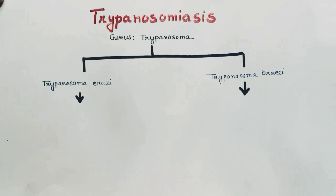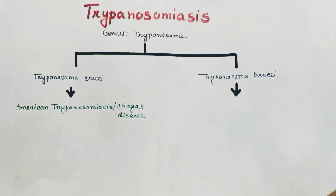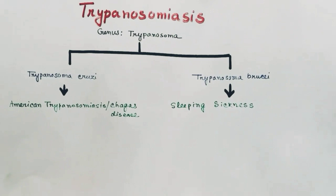The disease that Trypanosoma cruzi causes is American trypanosomiasis, or Chagas disease. The disease caused by Trypanosoma brucei is sleeping sickness, or African trypanosomiasis.